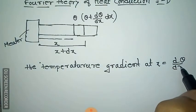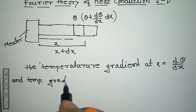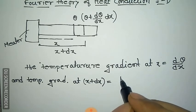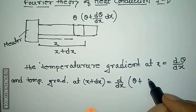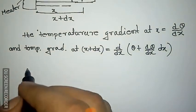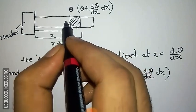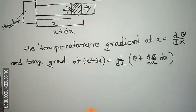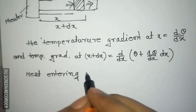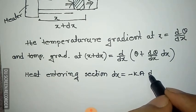At x the temperature gradient is d theta / dx, and at x plus dx the temperature gradient would be d/dx of (theta + (d theta / dx) dx). Now the heat comes across the section dx: the heat that enters section dx is Q1 = -k A (d theta / dx), from Fourier's law of conduction.